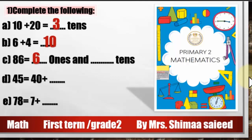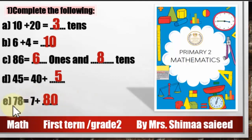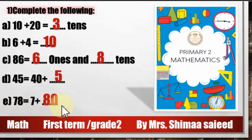45 equals 40 plus 5. 45 is in standard form, but 40 plus 5 is in expanded form. 78 equals 7 plus 80. 78 is in standard form; 7 plus 80 is in expanded form.